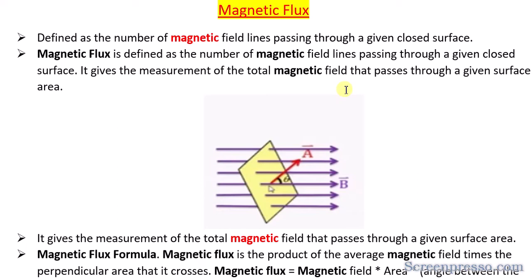Magnetic flux is essentially the measurement of the magnetic field — imaginary lines passing through a closed surface or given surface area. Let us consider this particular diagram. This is a surface, and through the surface these are the imaginary lines, shown with arrows. These imaginary lines pass through a surface area, which is a part of the total surface area, and with respect to that we are trying to define magnetic flux.